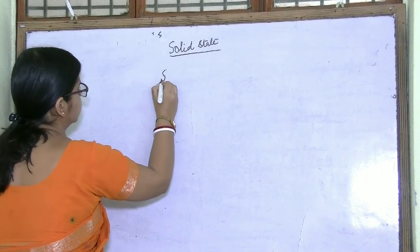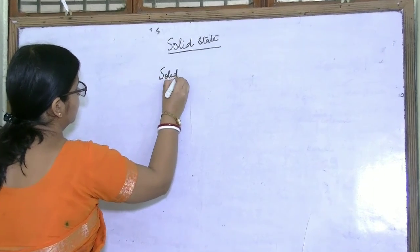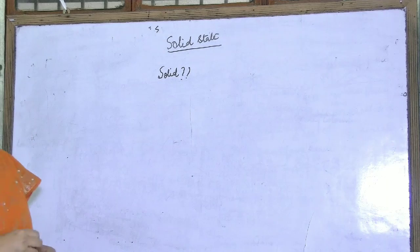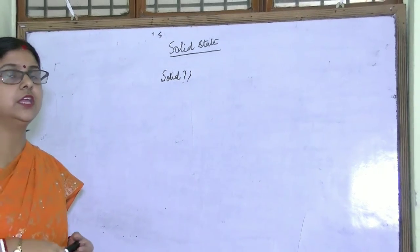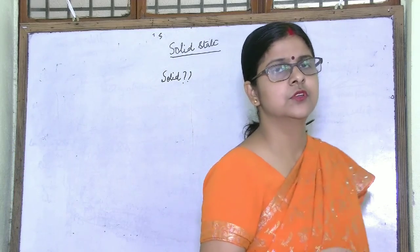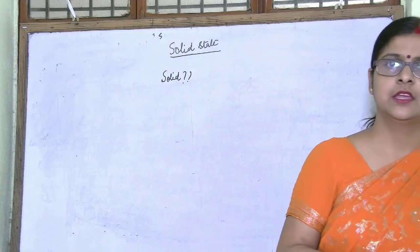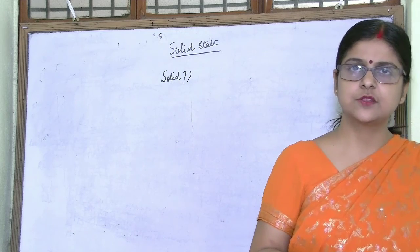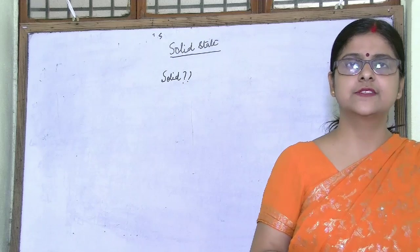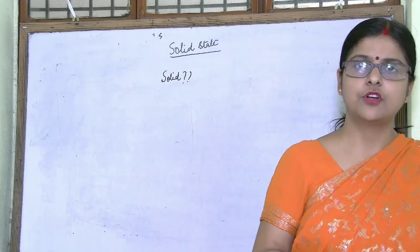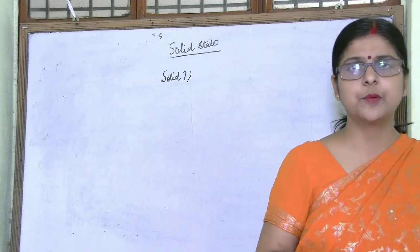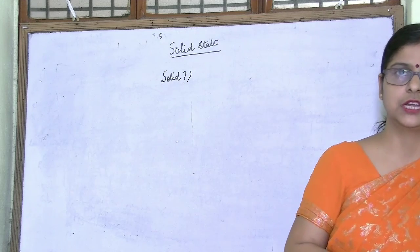What is a Solid? A solid is a state of matter in which the intermolecular forces of attraction between the particles is very high. Intermolecular space is low. So it is rigid, it is very less compressible — generally it is not compressible — and it does not flow. These are the properties of solids we have studied in our junior classes.